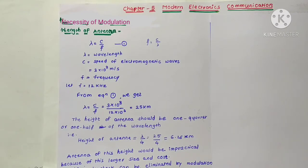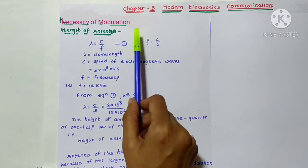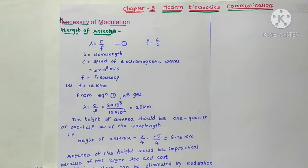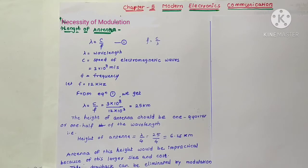Modern electronic communication includes the important factor of modulation. Now let us see why modulation is necessary. Information signals generally occur at lower frequencies in the frequency spectrum, and such signals cannot be radiated directly. There are three main reasons for this.